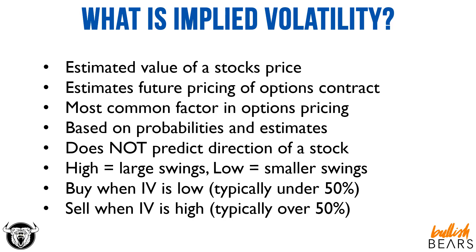Implied volatility does not predict the direction of a stock — it's based on probabilities and estimates. Typically, the higher the implied volatility, the larger the swings in the options contract. And the lower the implied volatility, typically the smaller the swings in an options contract.